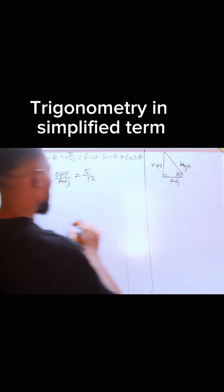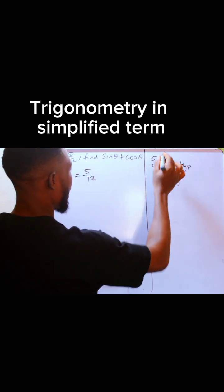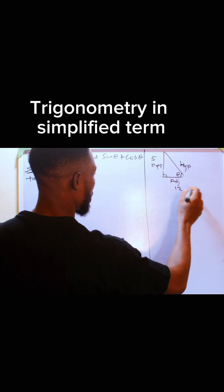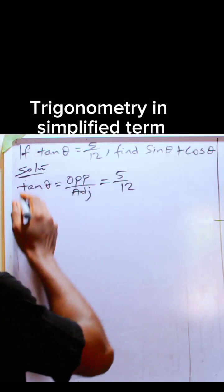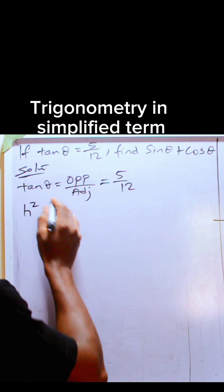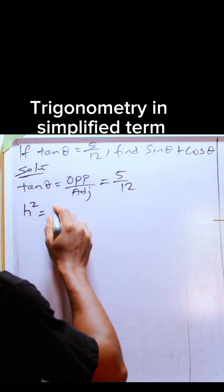From this, it means that opposite is 5 and adjacent is 12. What is the hypotenuse? Using Pythagorean theorem, we know that the square of the hypotenuse is equal to the square of the opposite plus the square of the adjacent.